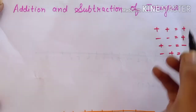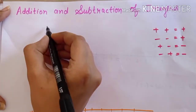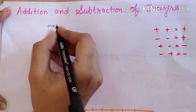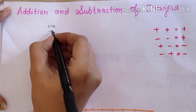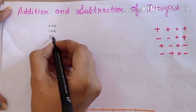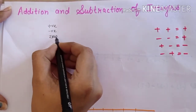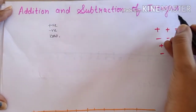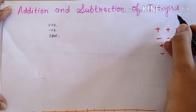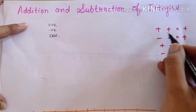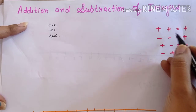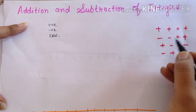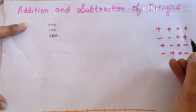Integers क्या हैं हमारे पास? कोई भी positive, negative या zero number — उसे हम integers कहते हैं। So हम जब उन्हें add करते हैं तो क्या होगा, subtract करते हैं तो क्या होगा, वो हम यहाँ पर study करेंगे।